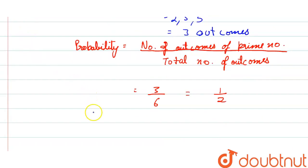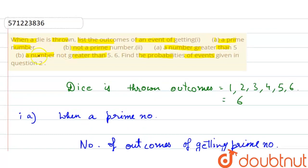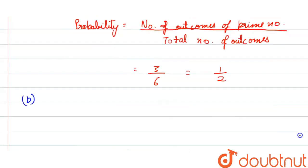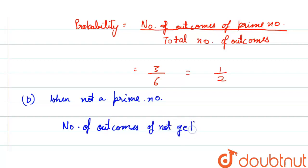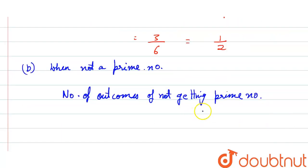Now for part B — not a prime number. The outcomes of not getting a prime number are 1, 4, and 6. So the total number of outcomes is 3.